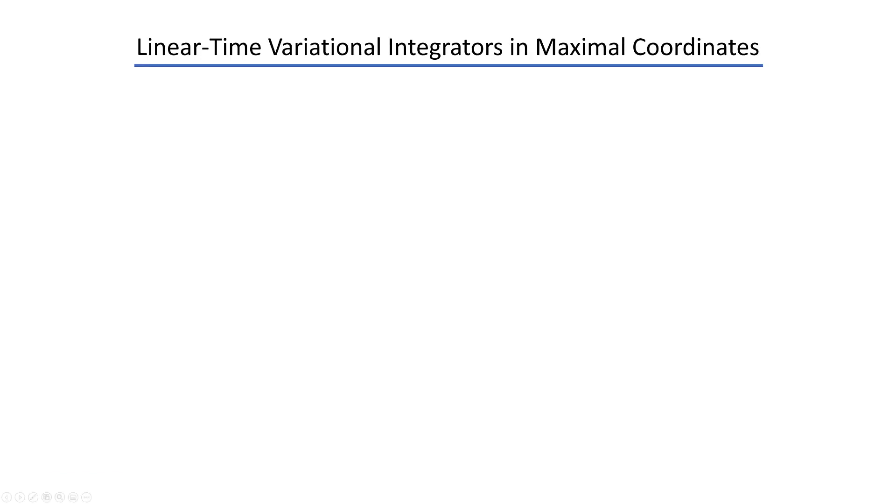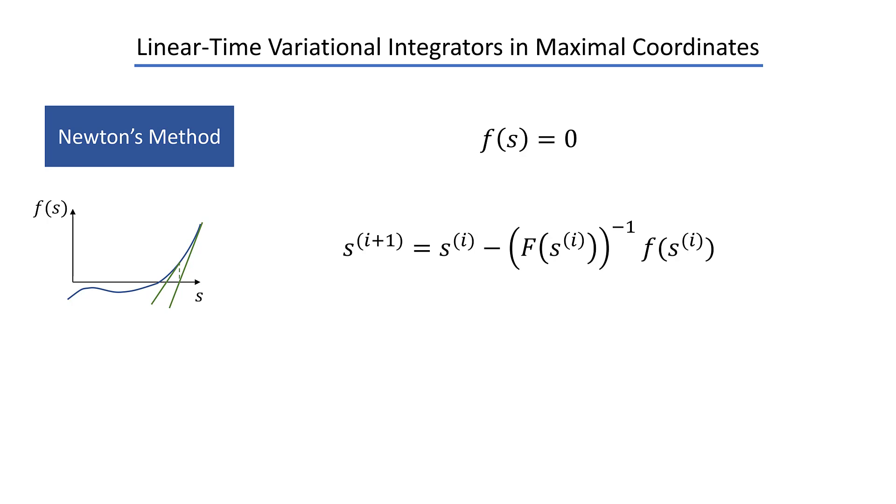The remaining question is now how can we do this integration efficiently? Typically, if you have such an equation f of s equals zero, what you do is you apply some form of Newton's method where we iteratively linearize the system of equations to get a better and better approximation of the solution. Here you see the standard Newton step where capital F is simply the Jacobian of our function f. And if we reformulate this slightly, we get this linear system where we are looking for delta s containing our solution at the next time step.